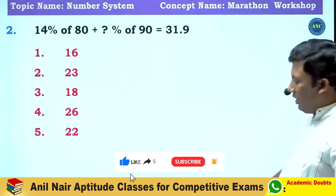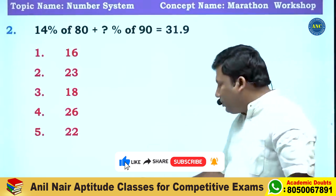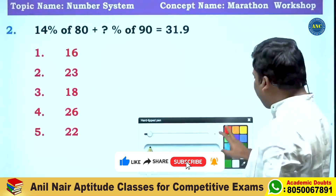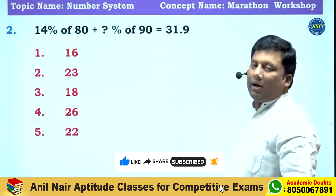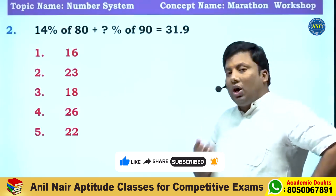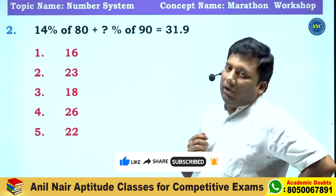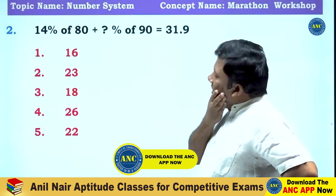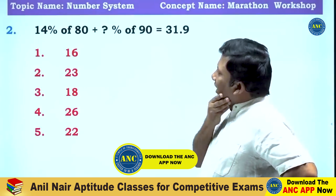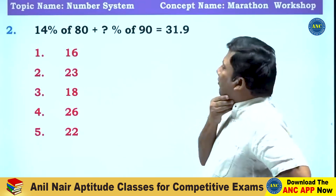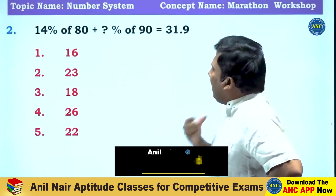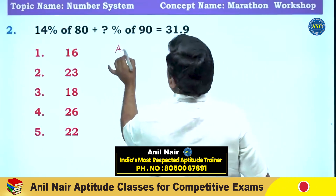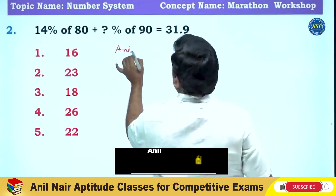Let's look at another simplification question from the percentage topic. 14 percentage of 80 plus a dash percentage of 90 is equivalent to 31.9. This is Anil Nair's way of solving.